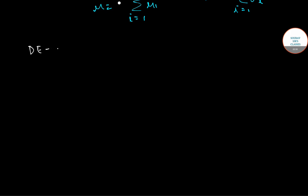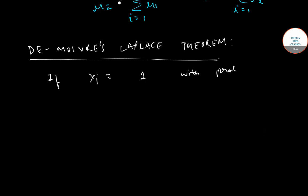Firstly, we have the DeMoivre's Laplace theorem. It states that if xi equals 1 with probability p and 0 with probability q,